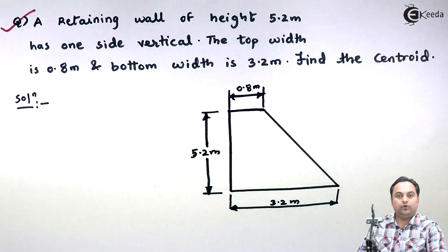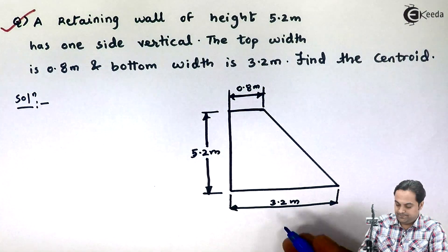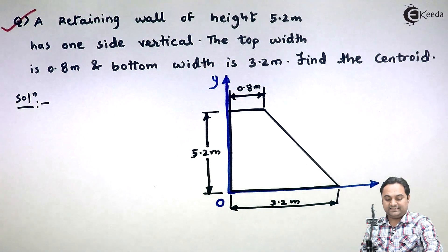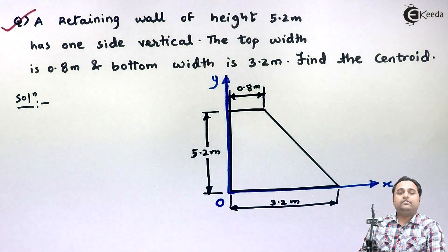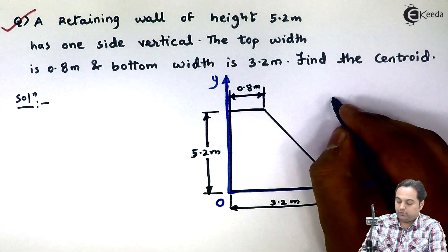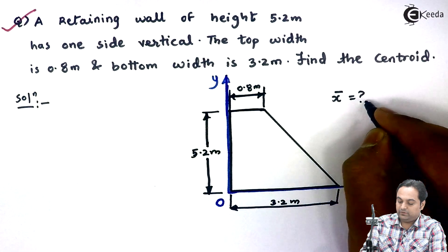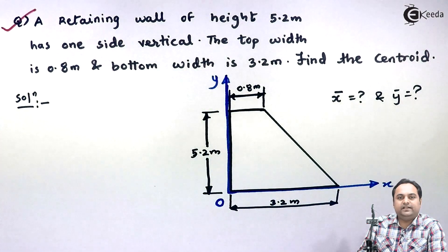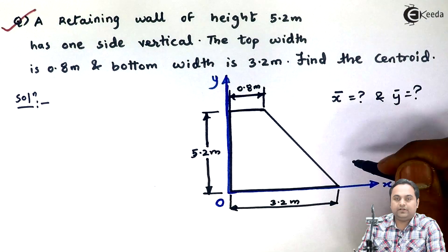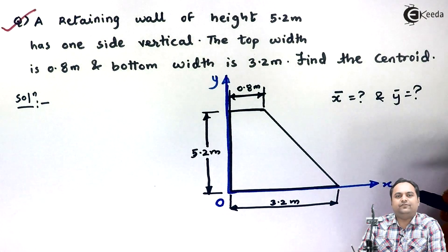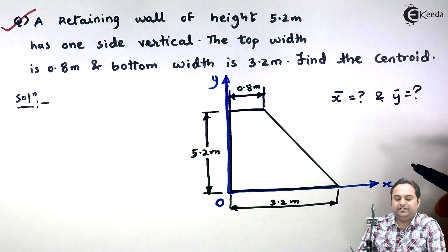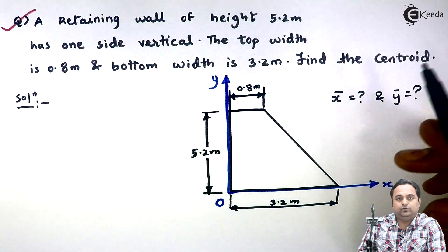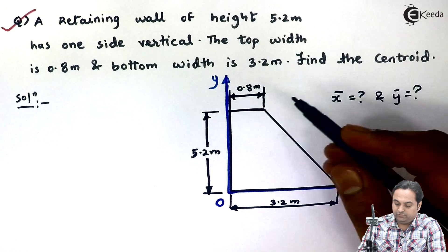I will be placing this retaining wall on an axis system. Since we have to find the centroid, it is located by x̄ and ȳ. We don't have a direct formula for the centroid of a retaining wall, so the simplest way is to divide this retaining wall into two simpler planes.